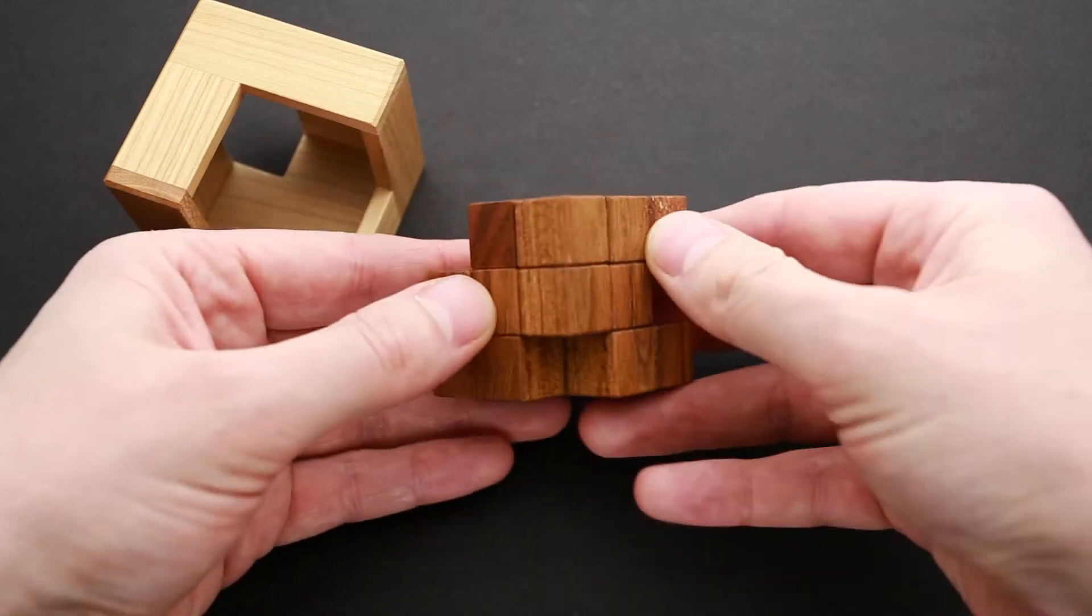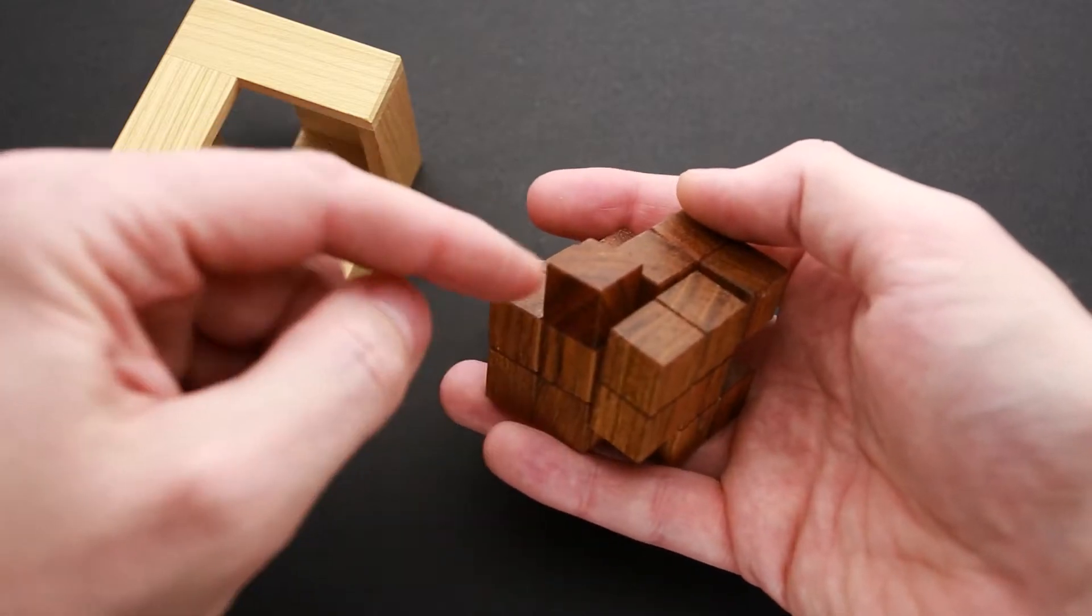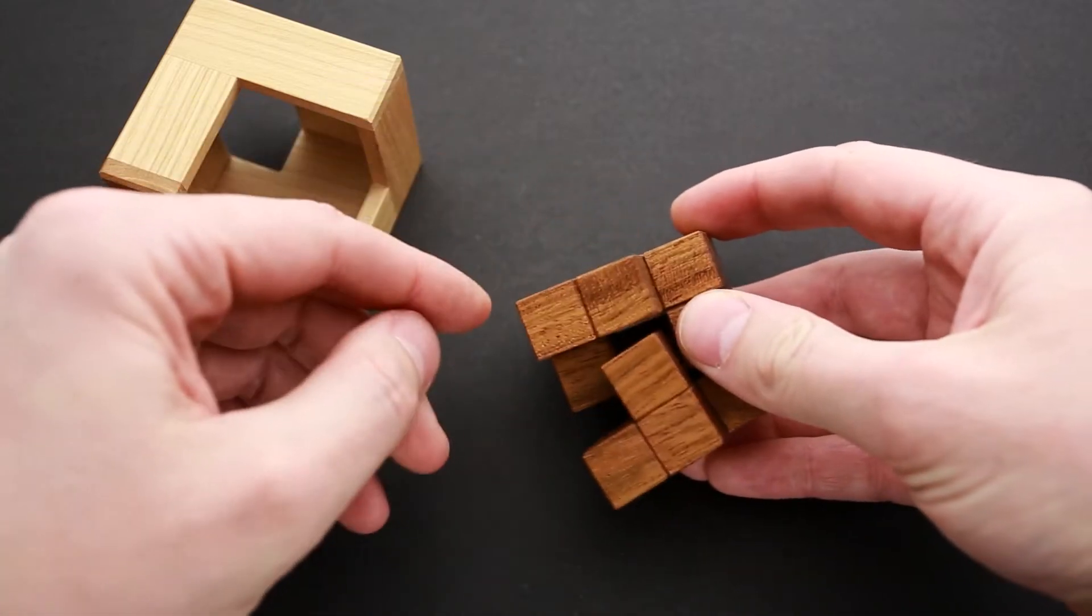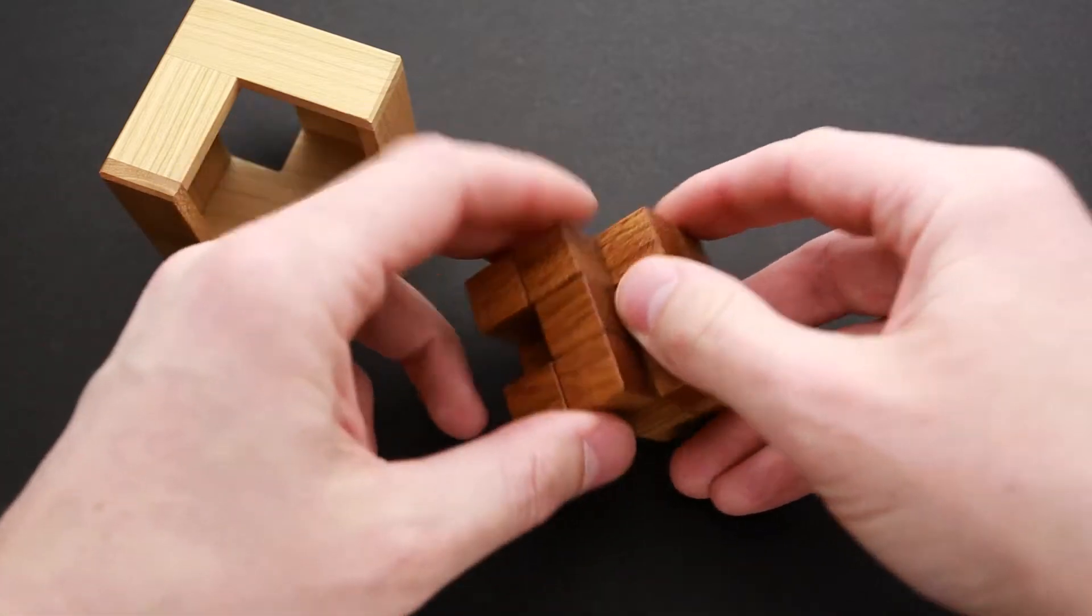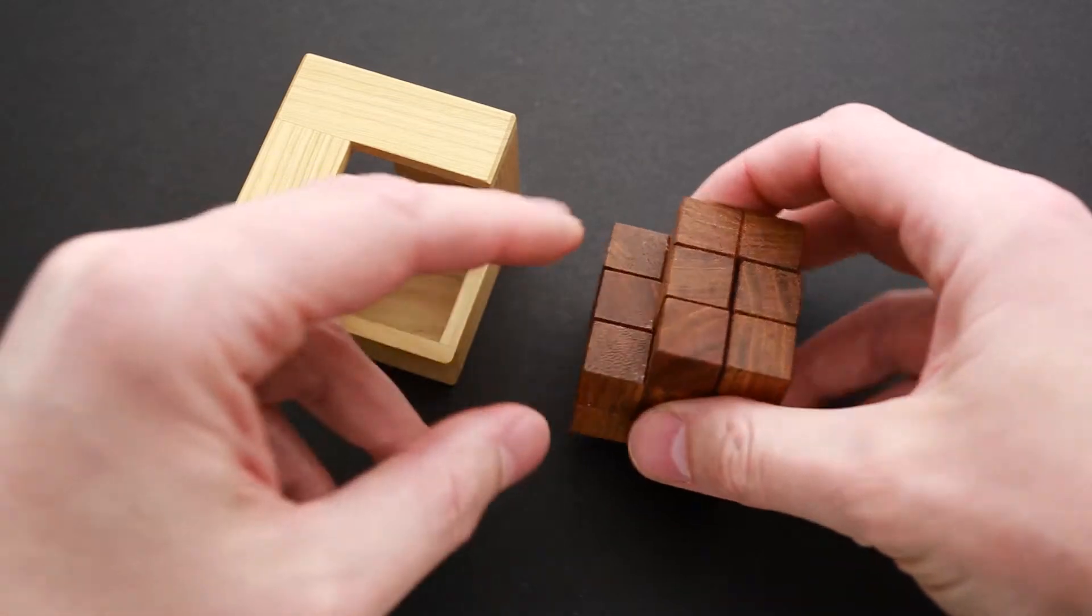If you take a closer look, you will see that the big opening will be covered with this part of the cube. The small opening will be covered with this part. Now we just have to figure out the way how to fit the parts inside.